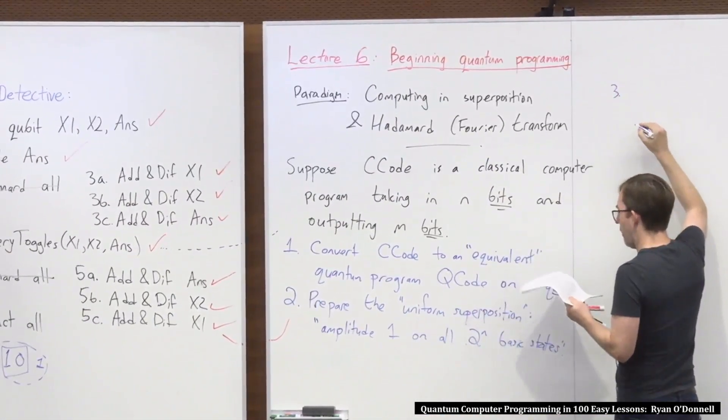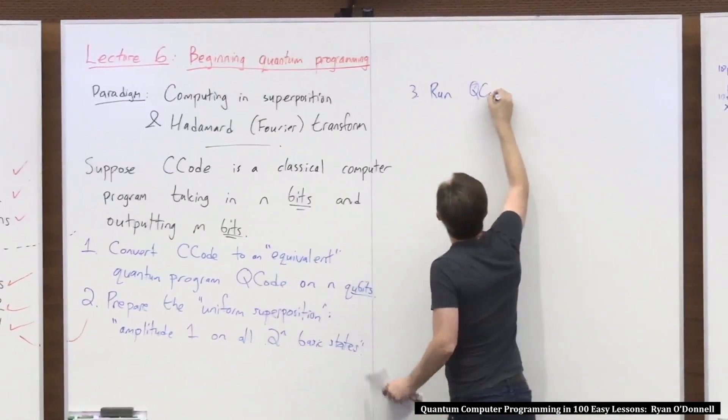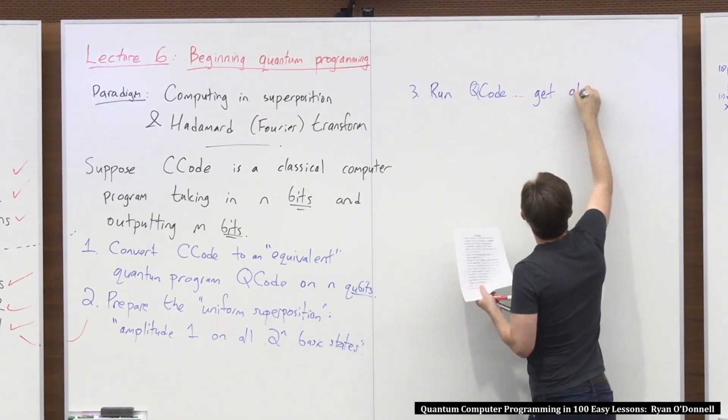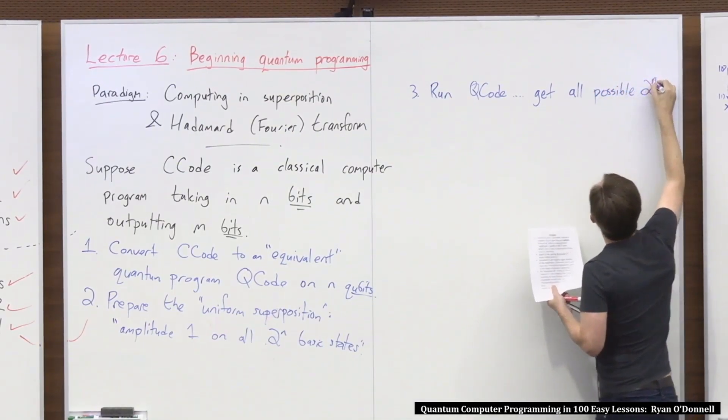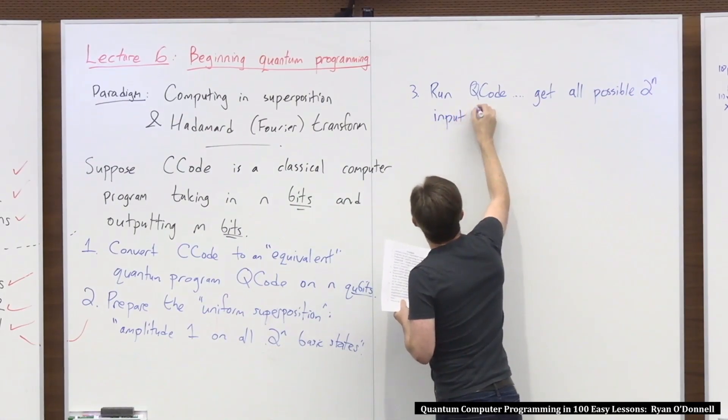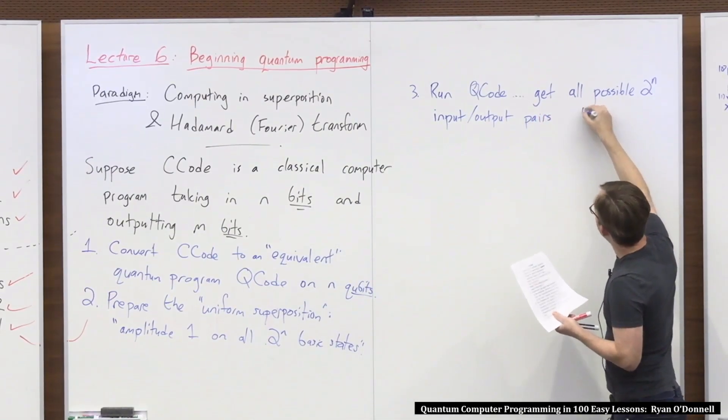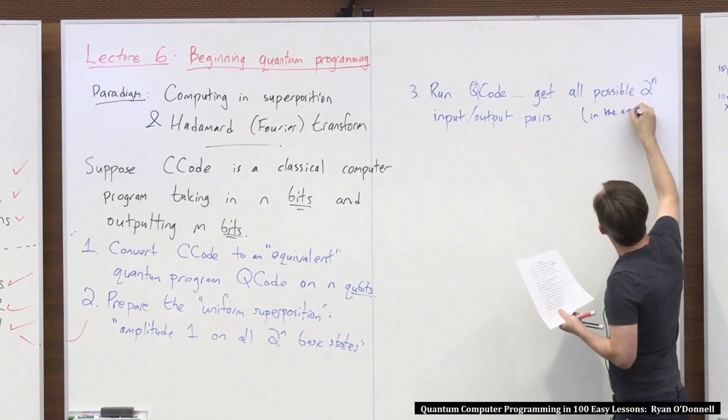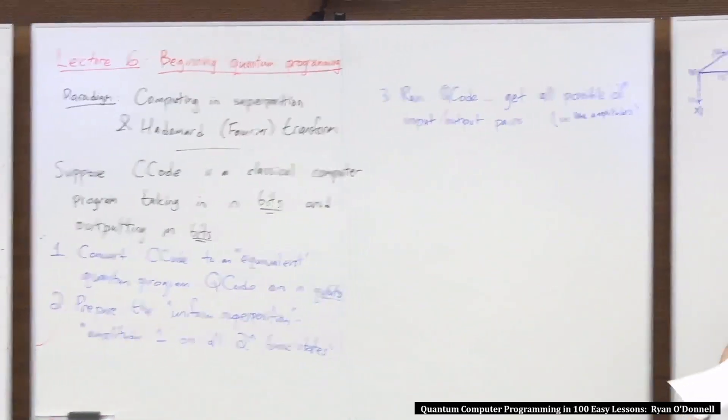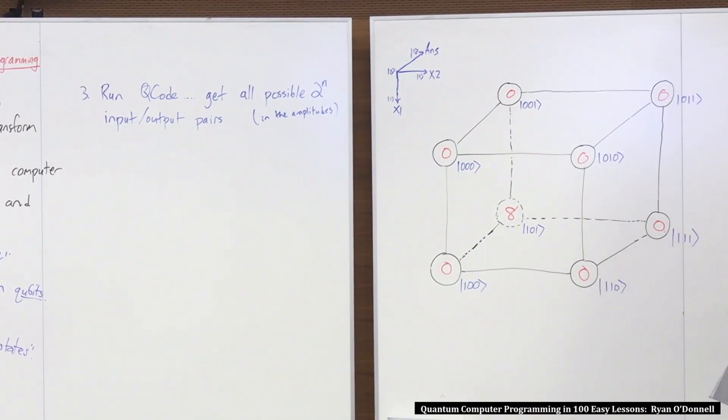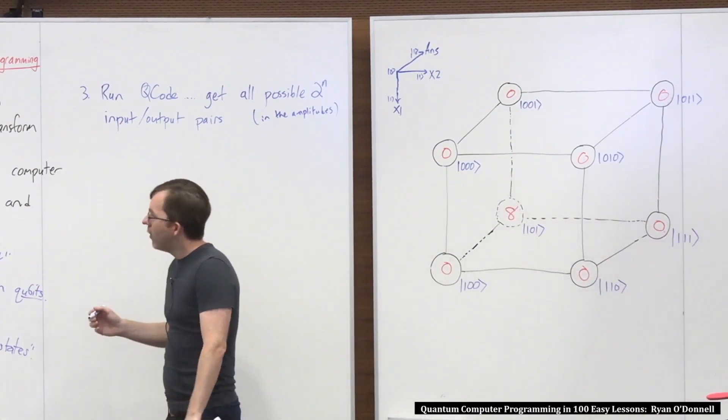So you're kind of going to get ready to use this quantum code, which operates on N qubits. So now you kind of have an equal amplitude on all possible inputs to the code. Then you're like, okay, this is pretty cool. I'll just run the quantum code. Run Q code. And then, in some sense, you get all possible two to the N input-output pairs somehow encoded in the amplitudes. Okay, again, we're going to flesh this out over the next two weeks.